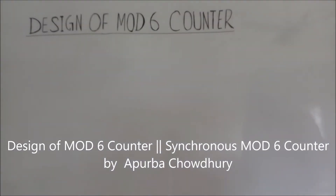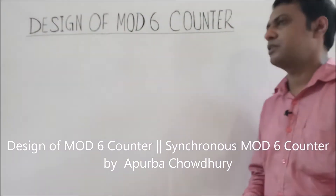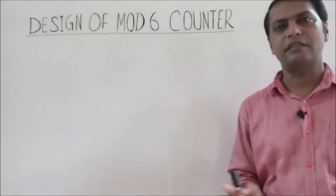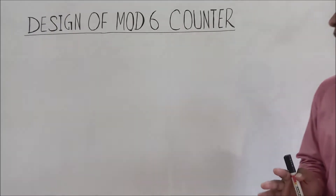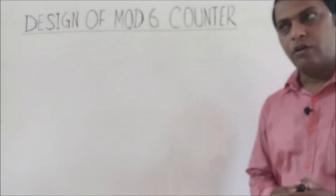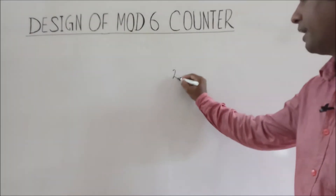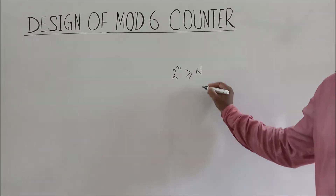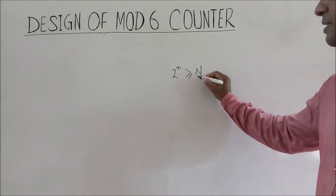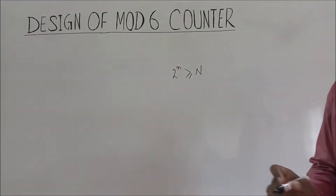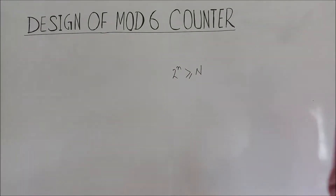Today we discuss the design of a mod 6 counter. In a mod 6 counter there are 6 different states. To design a mod 6 counter we require 3 flip-flops, since 2 to the power n must be greater than or equal to the number of states. Here n equals 3, so 3 flip-flops are required.